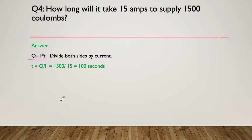So our Q is 1500 divided by 15, comes to 100 seconds. So we're going to need a hundred seconds of time for our 15 amps to create our 1500 coulomb.